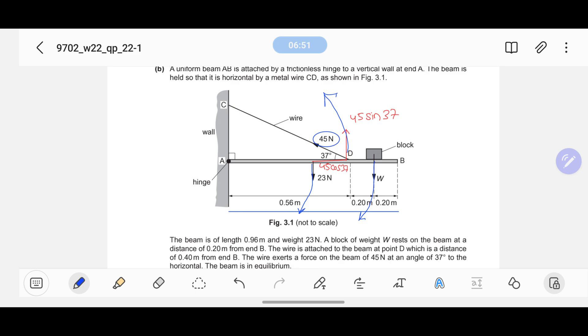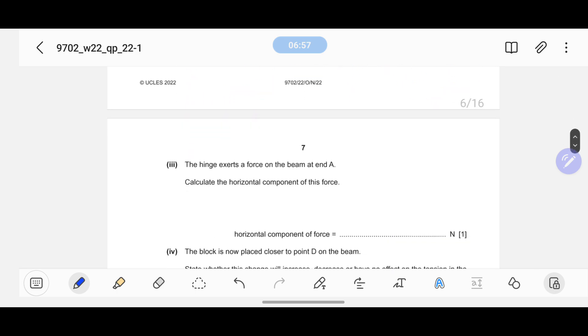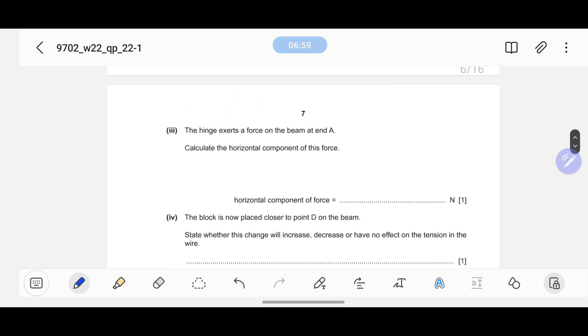45 cos 37. The value is coming 36 Newtons, so I have the answer of 36 Newtons.